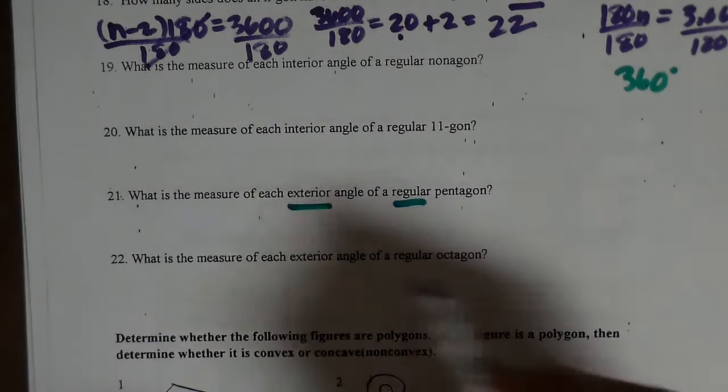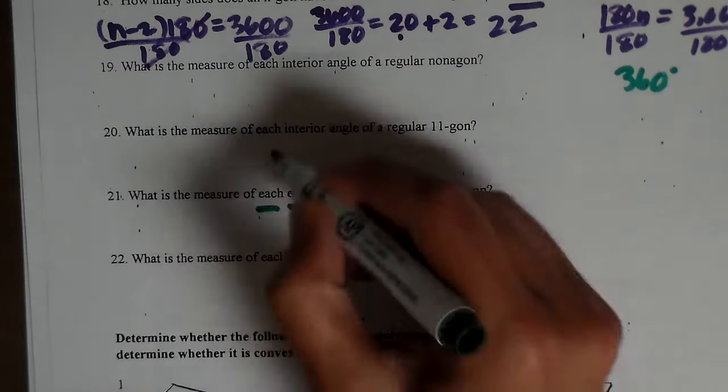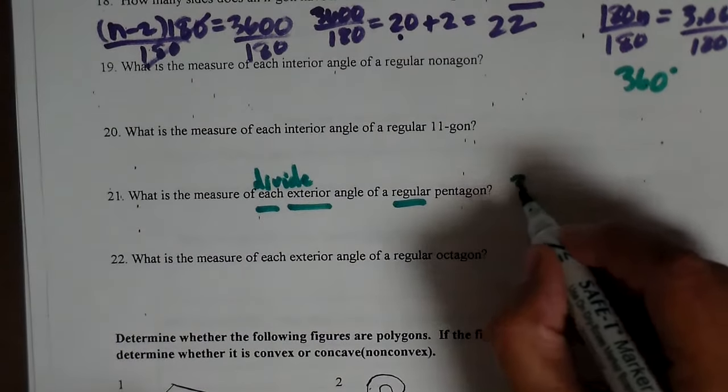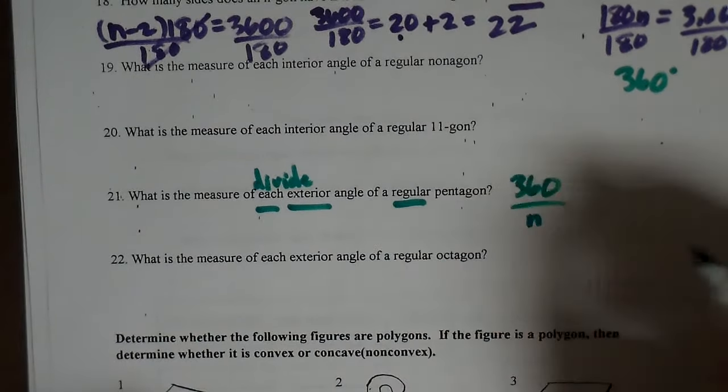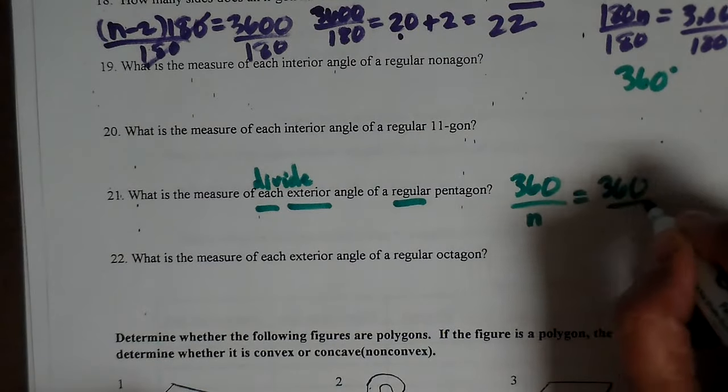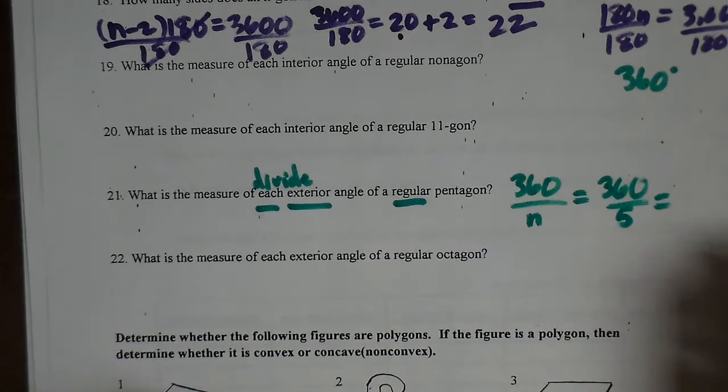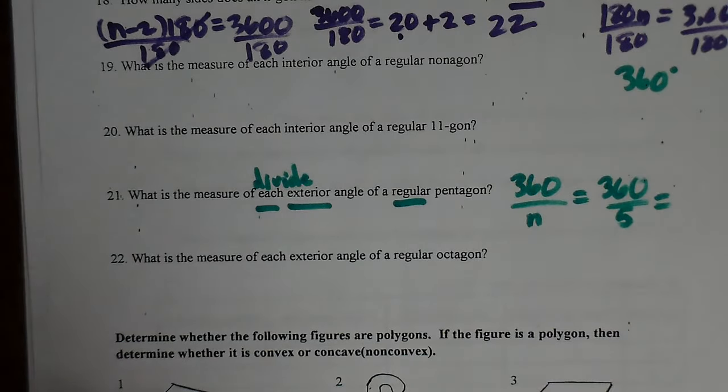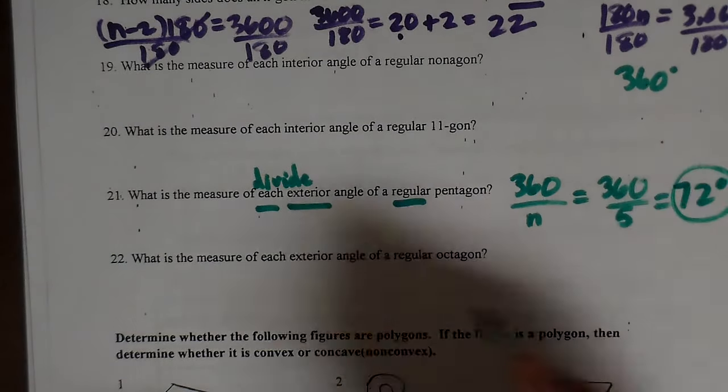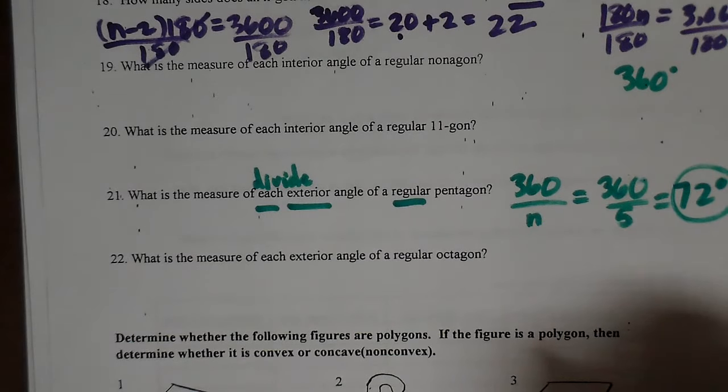So if I want to do each, that means divide. Each exterior angle of a regular pentagon, I'm going to take 360 and divide it by the number of sides I have. In this case, which is a pentagon, which is 5. 360 divided by 5. So you're going to take 360 and divide it by 5 and you'll get 72 degrees. That's the measure of each exterior angle of a pentagon.